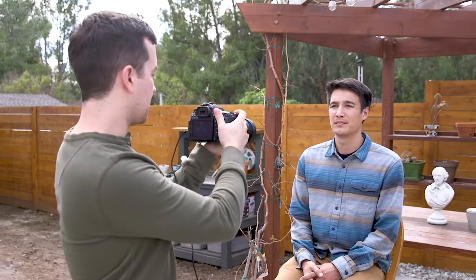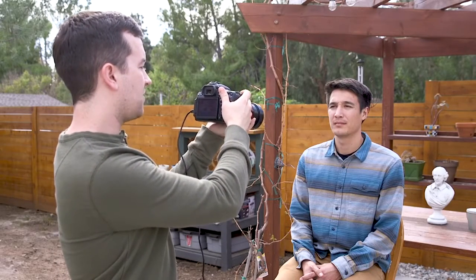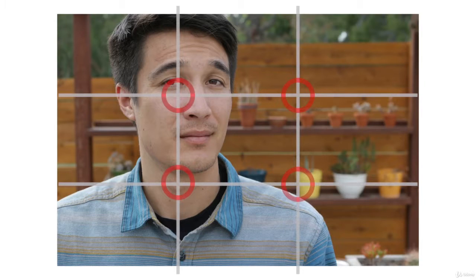So I'm just going to take that, putting Sam on the left-hand side of the frame. There we go — maybe zooming in just a little bit. I've put Sam's face in that intersection of the top-left lines, the horizontal and the vertical line.